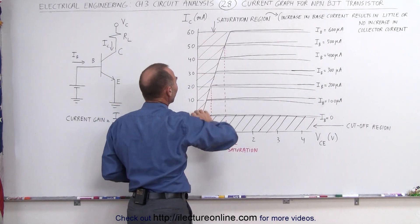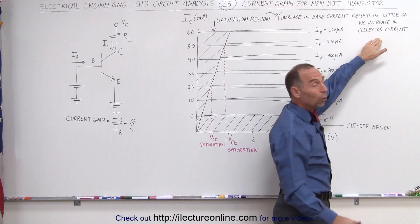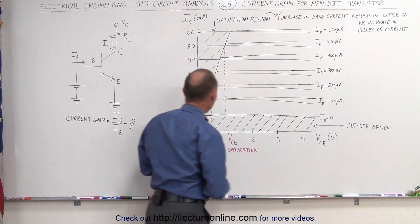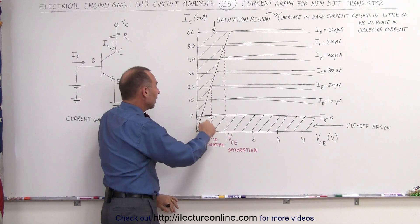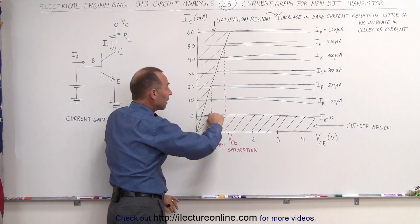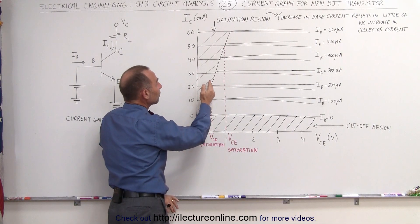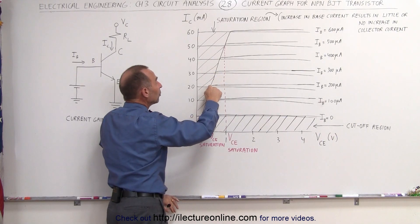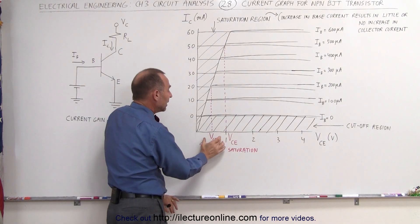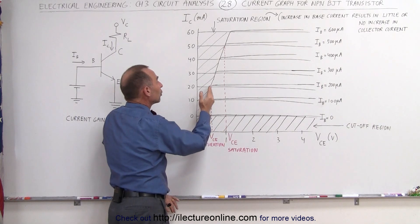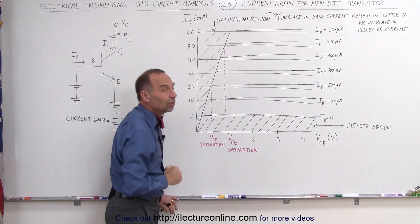We also have what we call the saturation region. Increasing the base current results in little or no increase in the collector current at a certain voltage. For example, at half a volt between collector and emitter, you can only increase the base current to 200 microamps — after that, any further increase in base current will not increase the collector current.